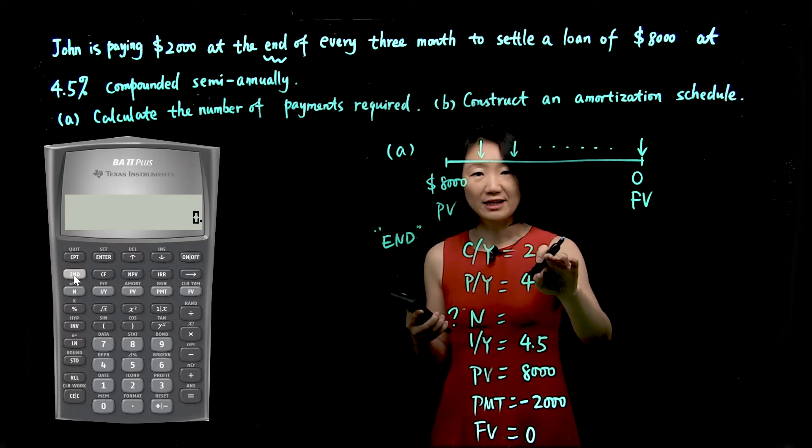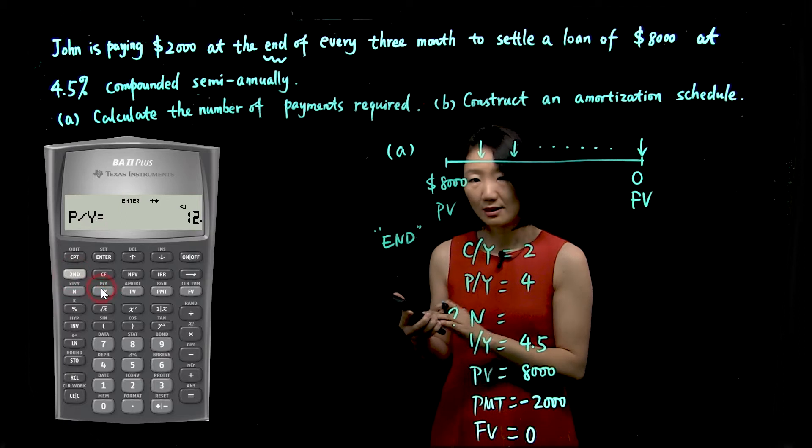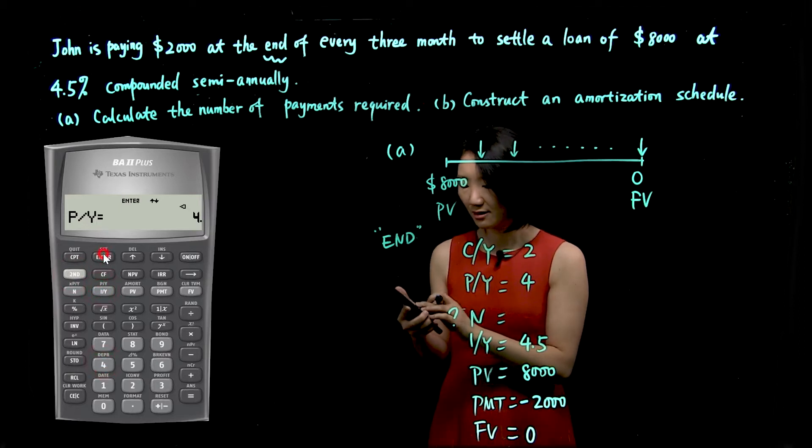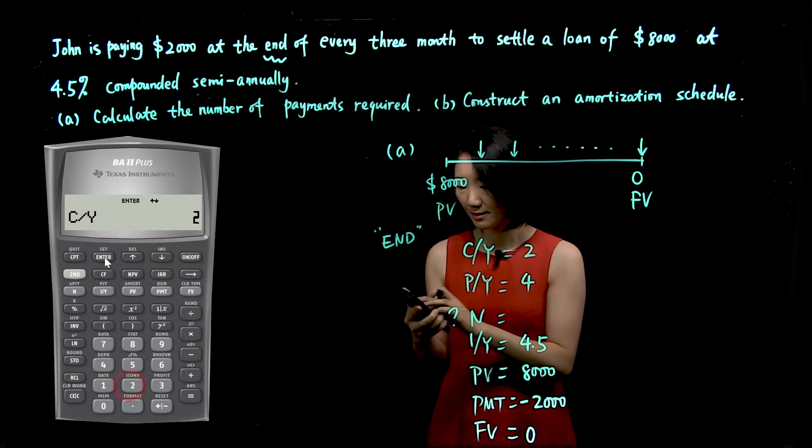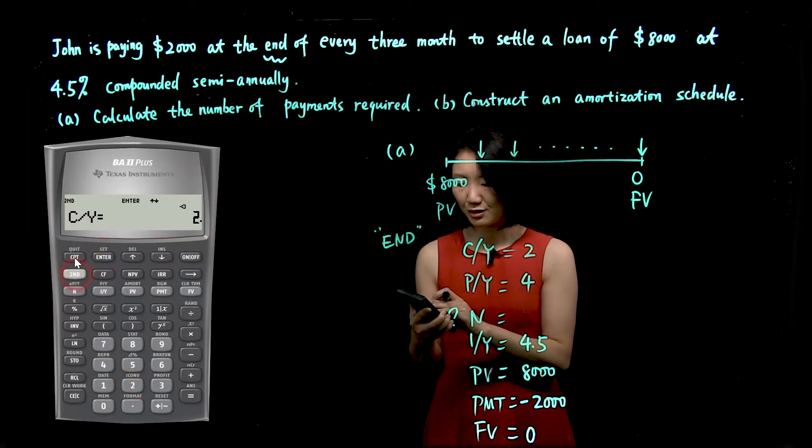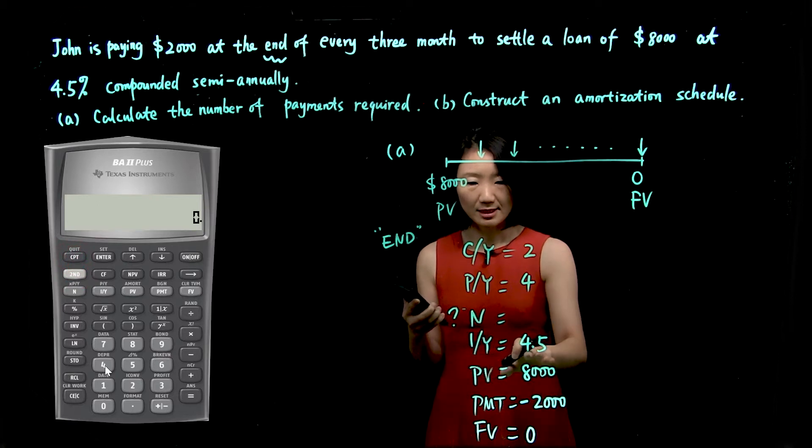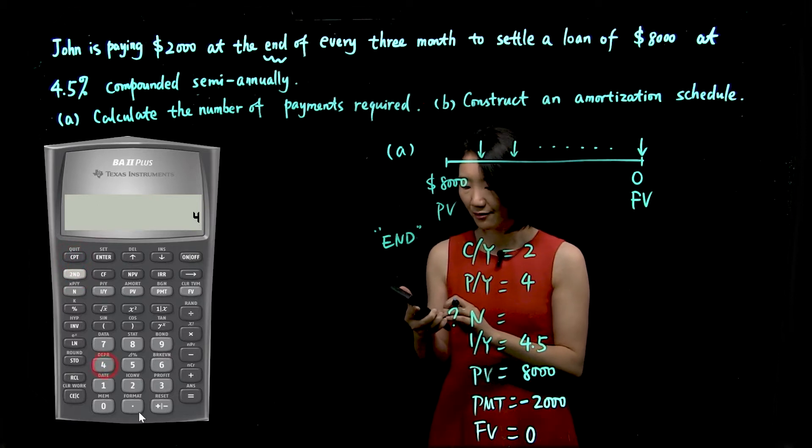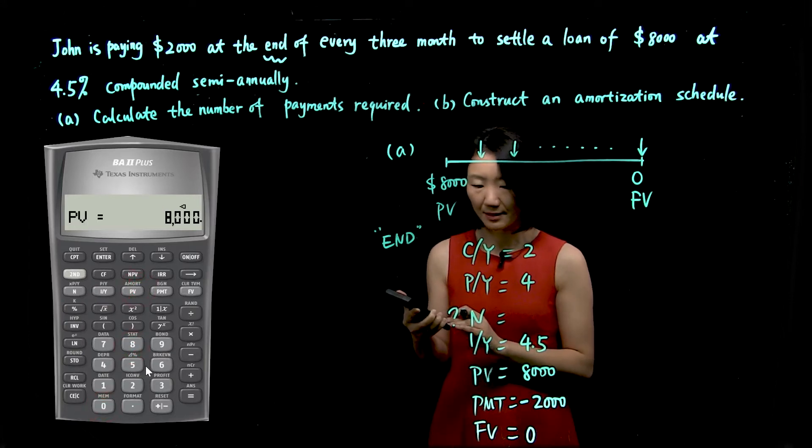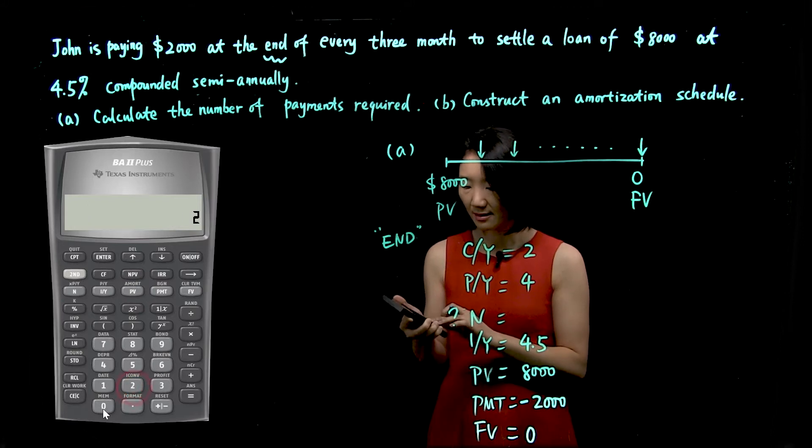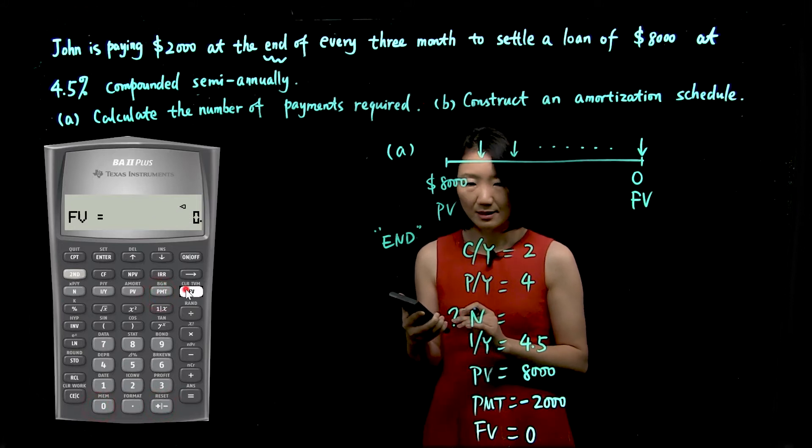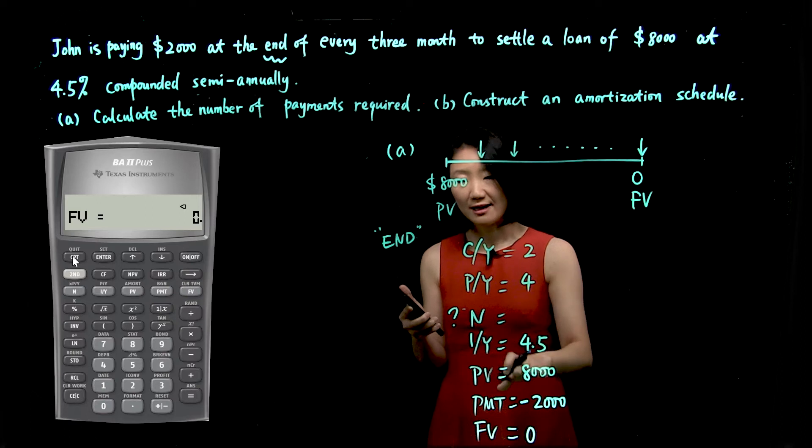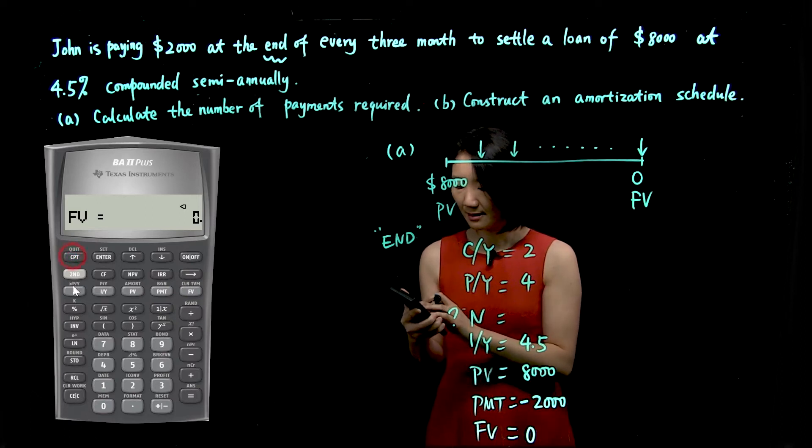In order to enter values for CY and PY, go to second PY. So PY is 4, enter. Scroll down, CY is 2, enter. Now exit by pushing second and quit. Interest rate IY is 4.5, so 4.5 IY. PV is 8,000. 8,000 PV. PMT is 2,000 and make it negative. Zero is for future value. Now we have four values out of five. We can compute the remaining. Compute N. N value is 4.115.